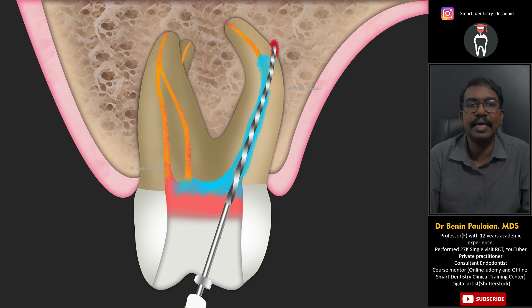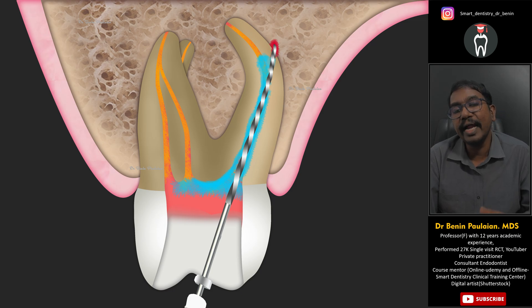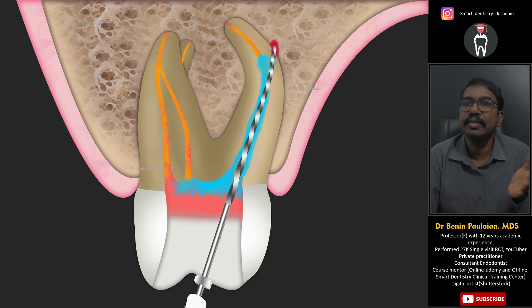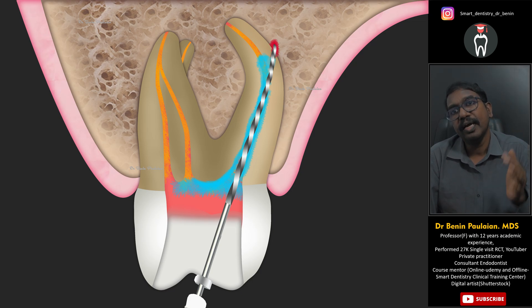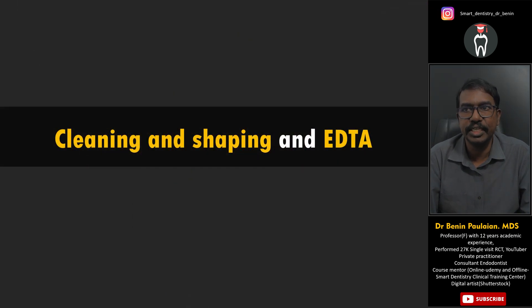In those situations, canals must be negotiated with a K file or specialized files meant for this purpose, and not by adding more and more EDTA. More EDTA may lead to procedural errors like canal deviation, apical perforations, or perforations at the site of curvatures. EDTA will not be useful for root canal negotiation.